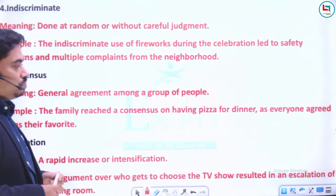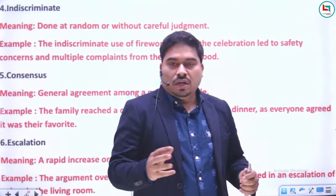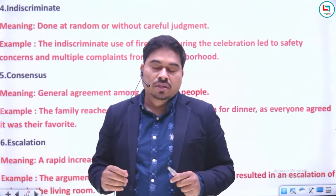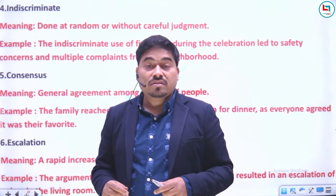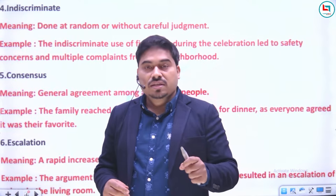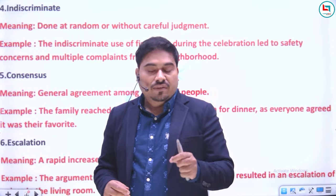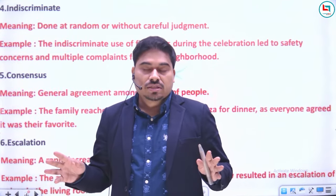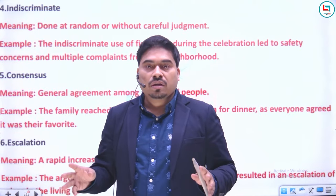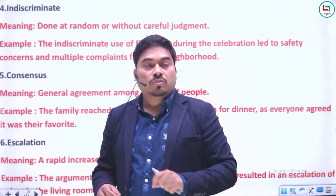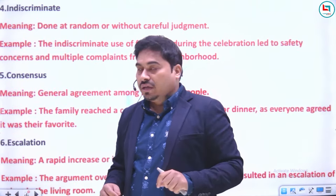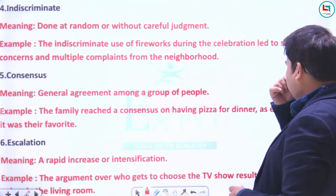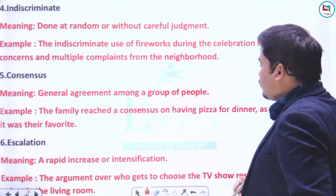Agla jo shabd hai woh hai 'indiscriminate'. Aapko yaad hoga mass killing ke liye teen shabd discuss kiye honge — massacre, genocide aur carnage. Massacre ka matlab tha 'indiscriminate and deliberate killings', jaise Jallianwala Bagh hatyakand — bina kisi discrimination ke, bina kisi bhed-bhaav ke, budhhe, bachche, jawan jo bhi aaye, sabhi ko maar diya gaya. Meaning: done at random or without careful judgment. Example: The indiscriminate use of fireworks during the celebration led to safety concerns and multiple complaints from the neighborhood.